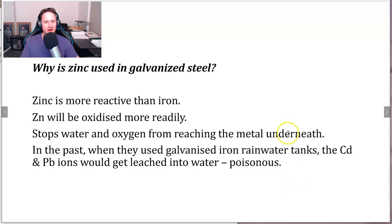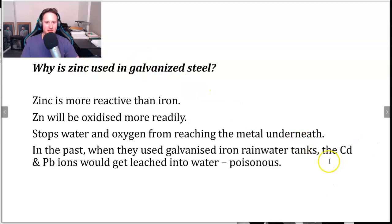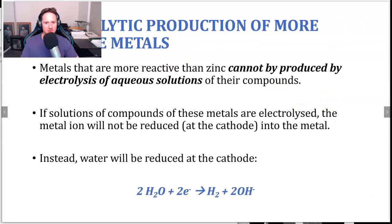Why is zinc used in galvanized steel? Zinc is more reactive than iron, so zinc will be oxidized more readily, which stops water and oxygen from reaching the metal underneath. In the past, galvanized iron rainwater tanks had cadmium and lead ions leaching into the water, which is poisonous. Zinc is therefore a key factor in galvanized steel, as opposed to those other metals with toxic byproducts.